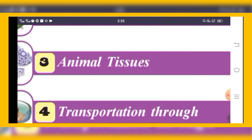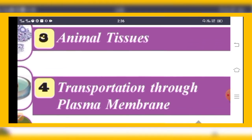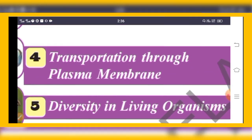Next is Animal Tissues, which is somewhat different from plant tissues. We will discuss animal tissues in that chapter. The fourth chapter is Transportation Through Plasma Membrane. We know about cell wall and cell membrane — the plasma membrane's functions and structure will be studied in ninth class.